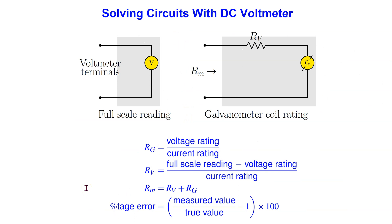In conclusion, in this video we have looked at how to solve circuits with a DC voltmeter. Since the voltmeter is designed to measure voltage, it must be placed in parallel with the circuit element whose voltage is being measured. We have seen how to design the voltmeter and how to work out the impact of the voltmeter on the circuit being measured in terms of the percentage error. Thank you for watching this video.